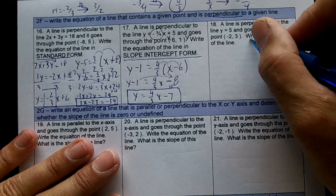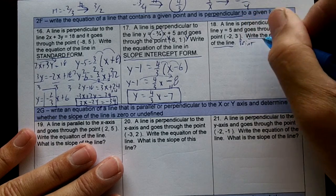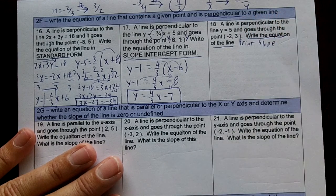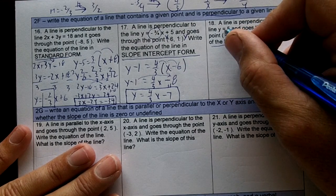Now, it says write the equation of the line. It doesn't say in what form, so let's use point slope. That's the easiest. So the line is perpendicular to the line y equal 5.